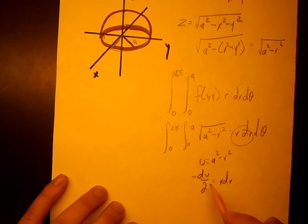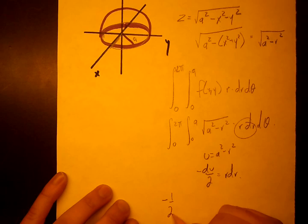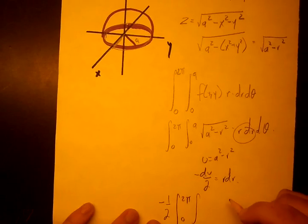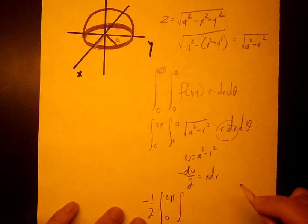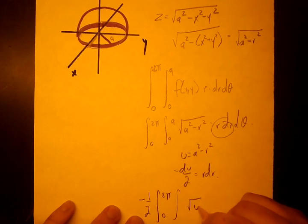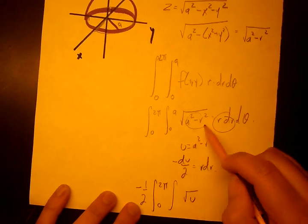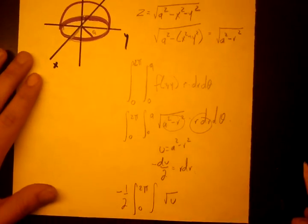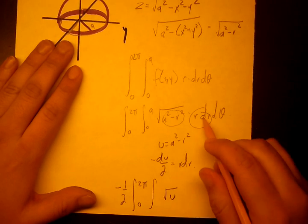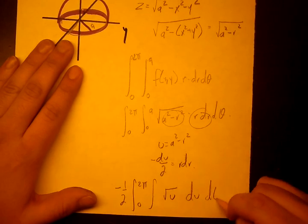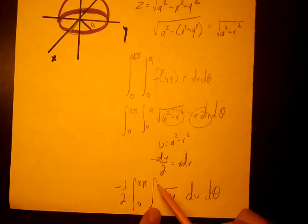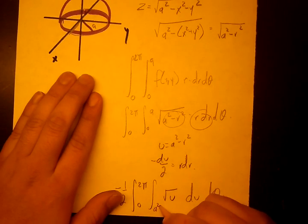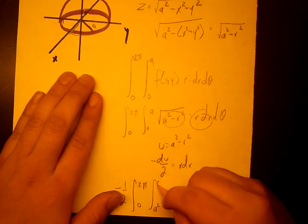I'm going to take the negative 1 half and move it to the very outside. So we're going to have 0 to 2 pi. I'm going to leave these limits blank for just a second because I want to convert them in terms of u. We're going to have radical u because this inside quantity we defined as u. And r dr became du, and we have d theta. So now the limits are going to be in terms of u. When we plug in 0 into this u equation, it's going to be a squared. And when we plug in a, we're going to get 0.